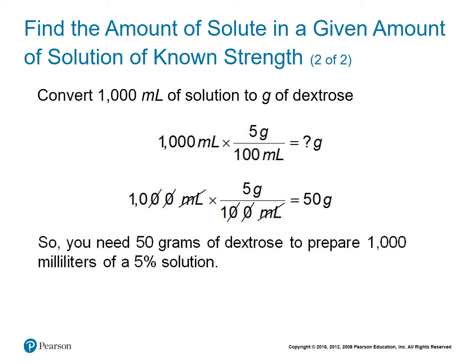Because we have 1000 milliliters of solution, we take our strength and multiply it by the amount of our solution. The strength is 5% — five grams per 100 milliliters — multiplied by 1000 milliliters. We take 1000 divided by 100, which gives us 10, then 10 times 5 equals 50 grams. So you would need 50 grams of dextrose to prepare 1000 milliliters of a 5% solution.